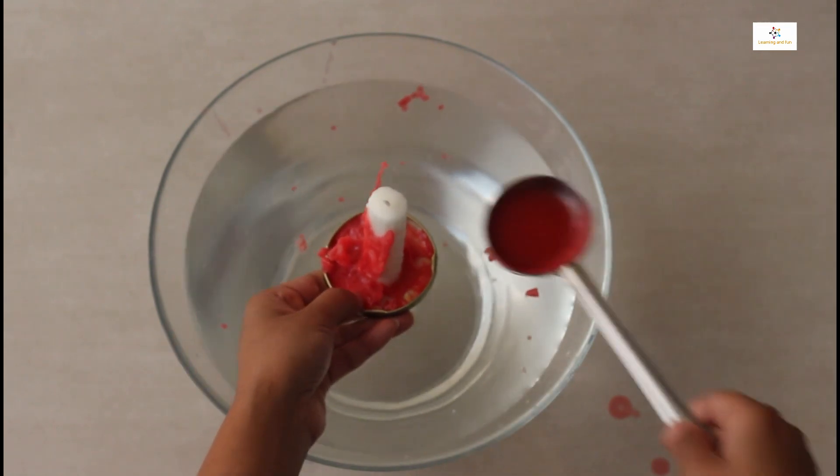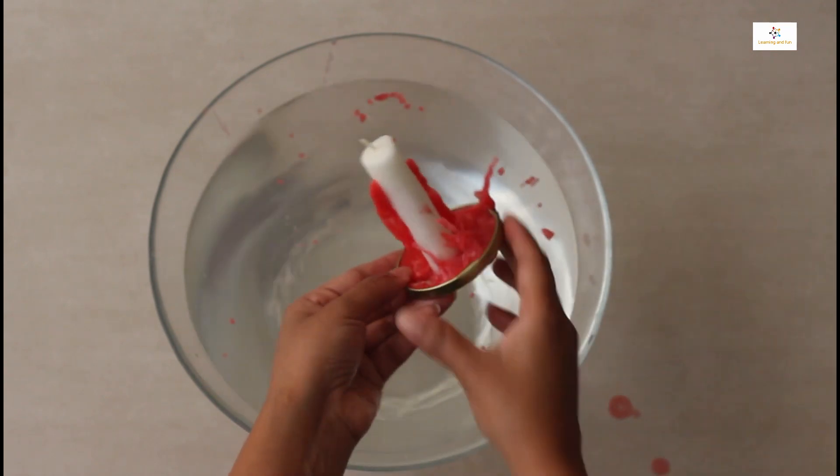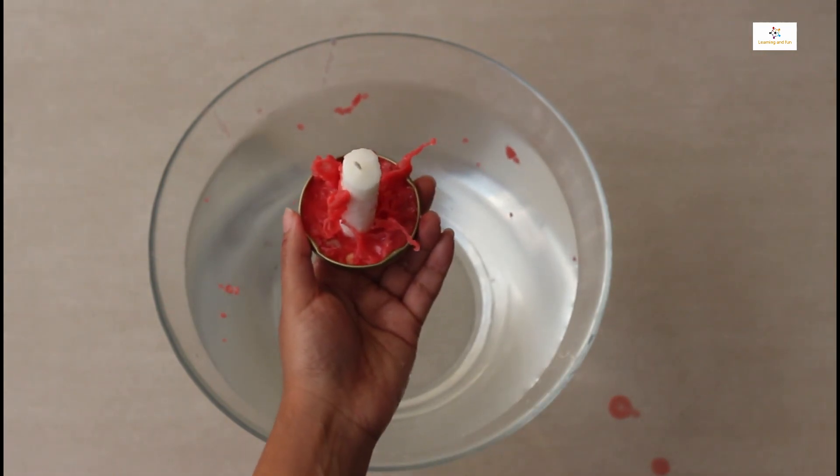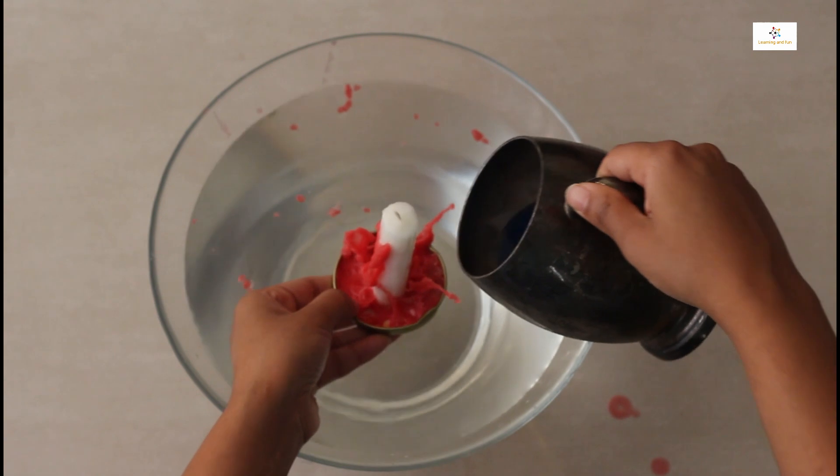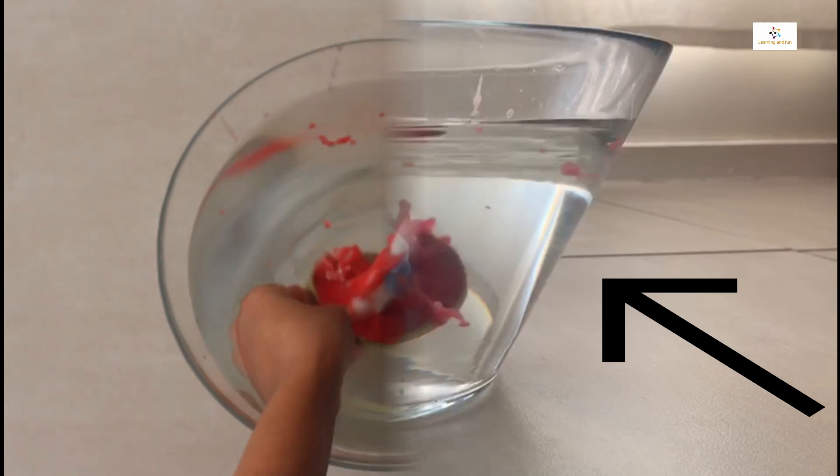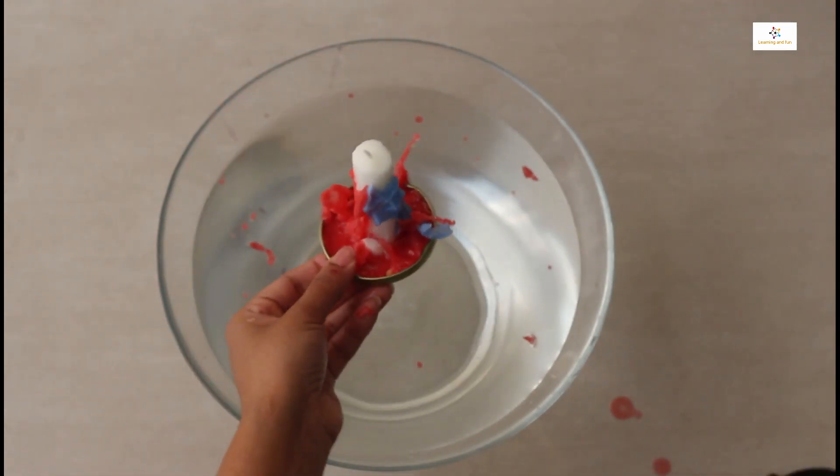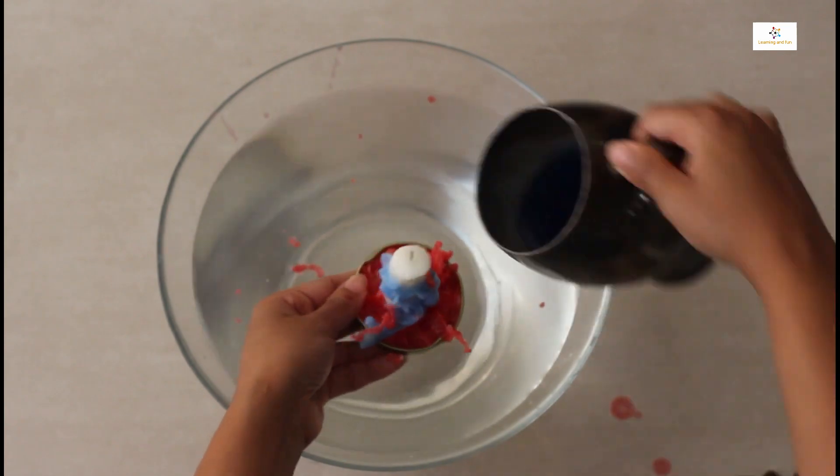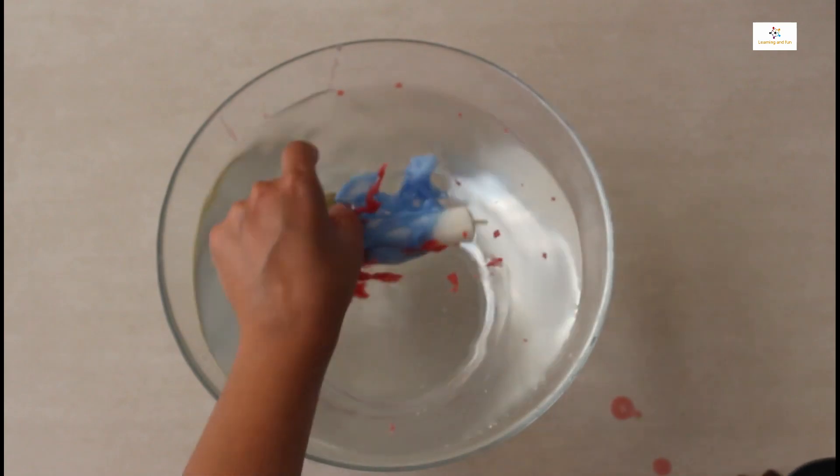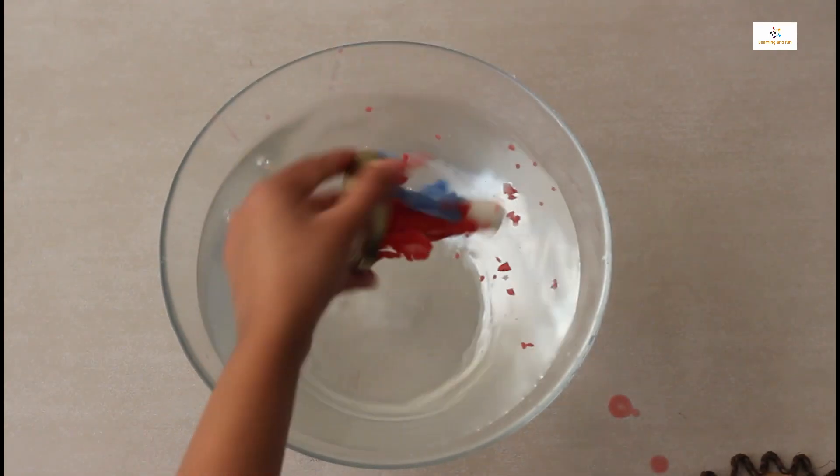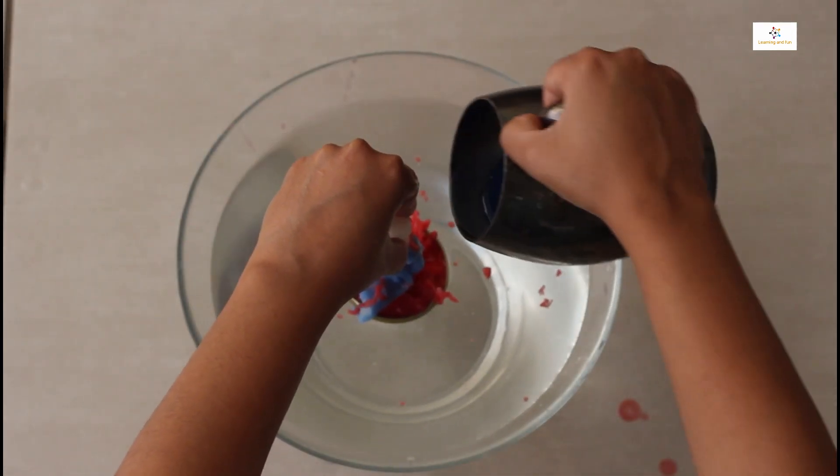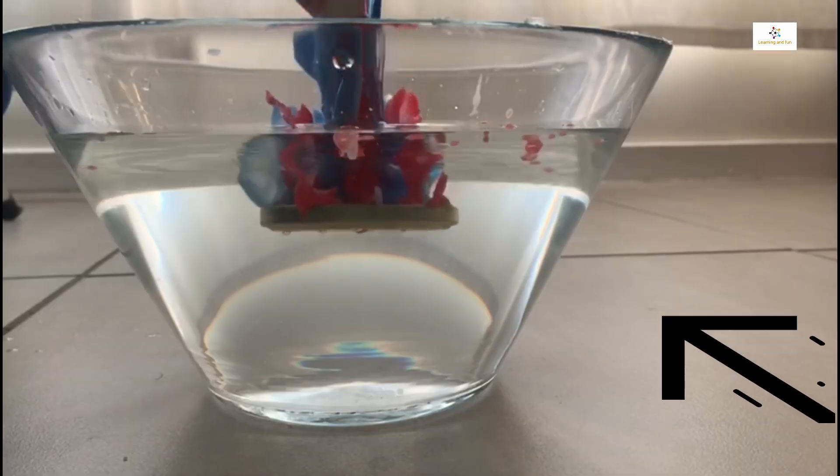You can see how it is expanding into a different shape. Can you see how beautiful it is? Now I am pouring the blue color. You can see how it is going into the water. Again some blue. Adding some more blue, you can see how it works.